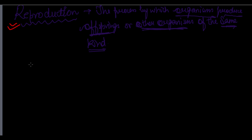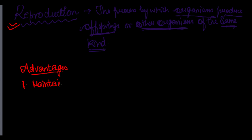After defining reproduction, let us look at its advantages. The first advantage of reproduction is that it maintains a species. It maintains a group of organisms, maintains their existence, and helps them survive.